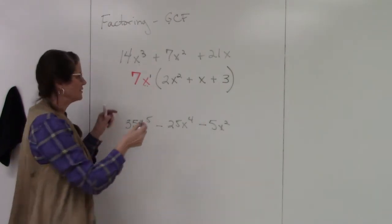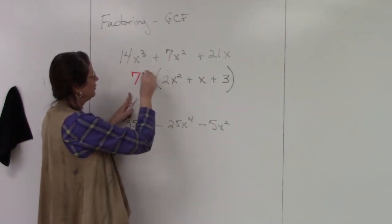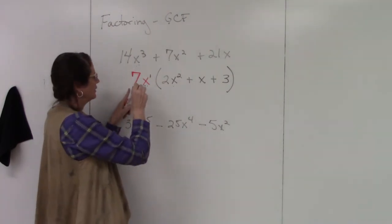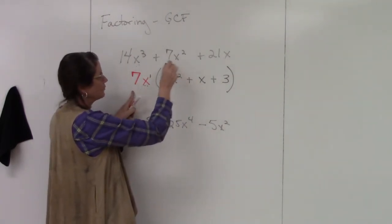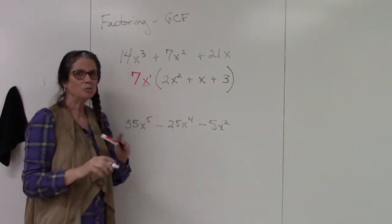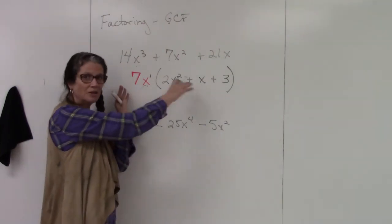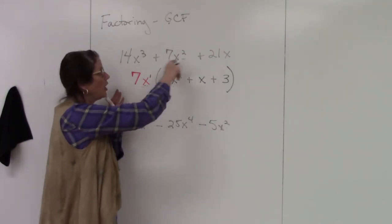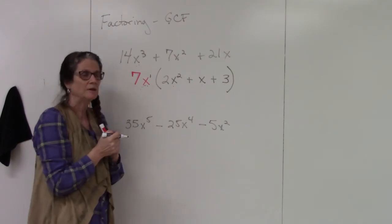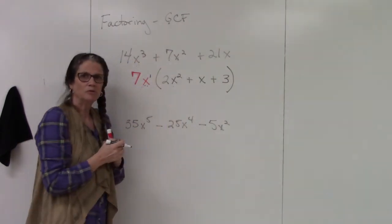Now, how do you check these? Multiply it back through. 7x times 2x² gives me 14x³. 7x times x gives me 7x². 7x times 3 gives me 21x. Super easy to check these. You should never get them wrong because if you just take the time to multiply it back through, you should always come back to the original. These are the factors that give you that when you multiply.